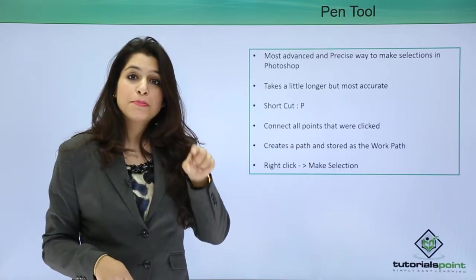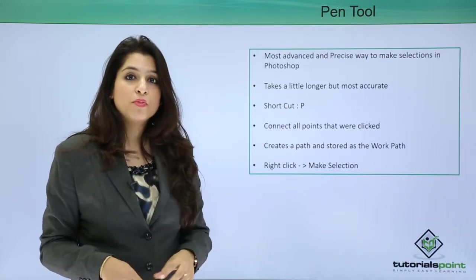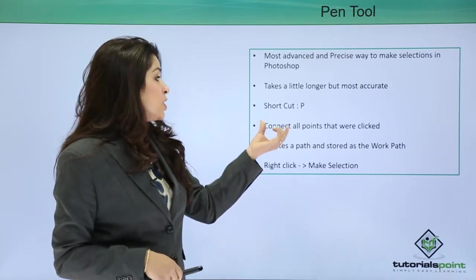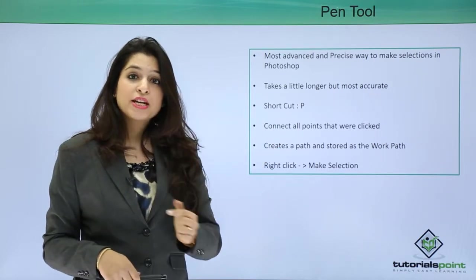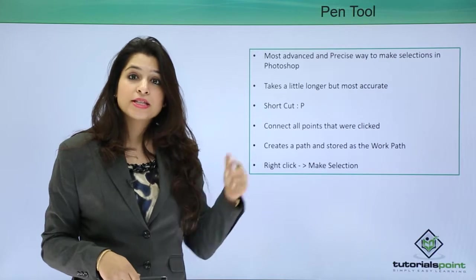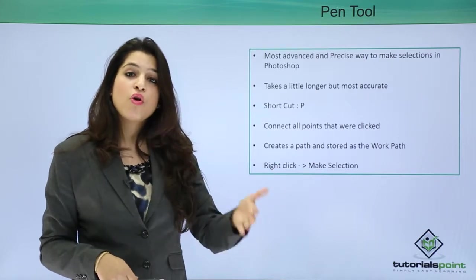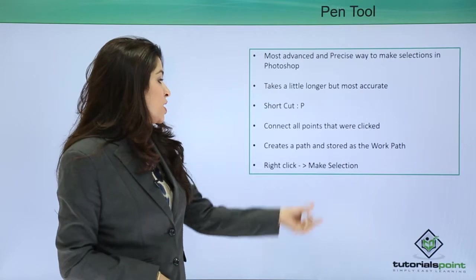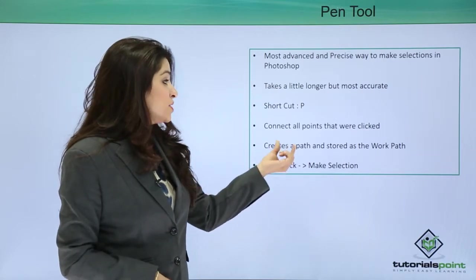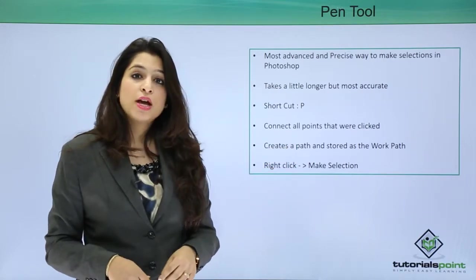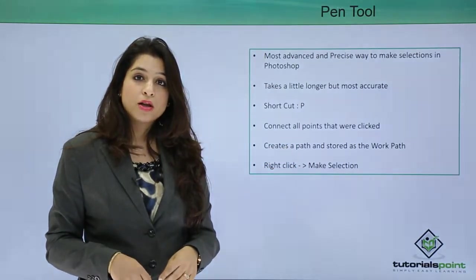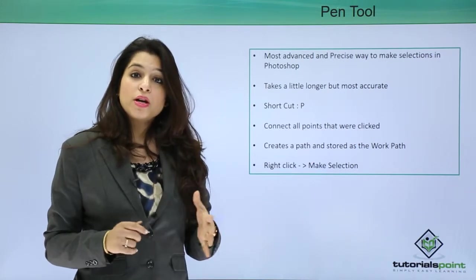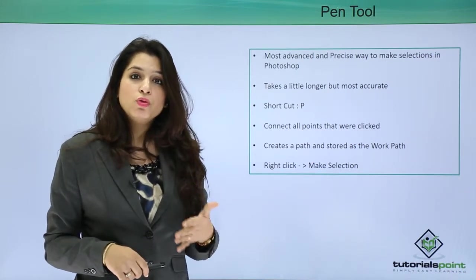When you press P on your keyboard the pen tool is activated. By clicking, you create anchor points, and the connection of all these anchor points becomes your path. A path is created and stored as the work path. The path panel is very close to the layer panel.